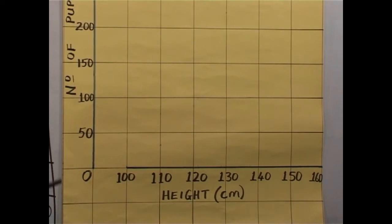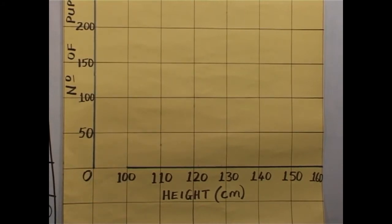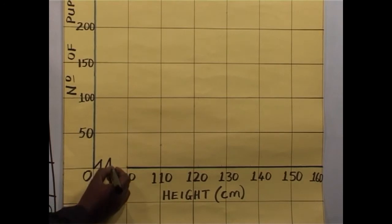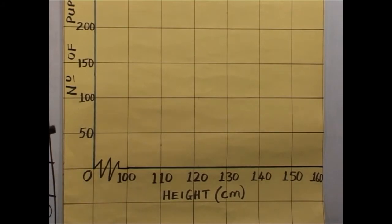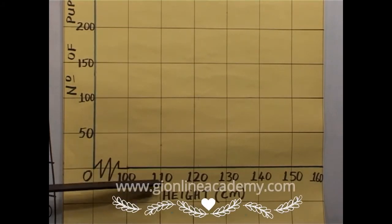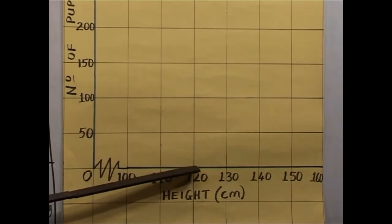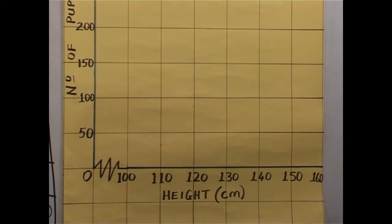Now, when you are drawing your graph, at the start here, we want to make a continuous line. You have to show that there is an equal interval. So to do that, you do a zigzag line like this. That zigzag line is showing that this interval is different from the others. So you are moving from 0 — there is that jump to 100. So at the beginning, you always start 0, then you put that zigzag line. From 100, then you proceed.